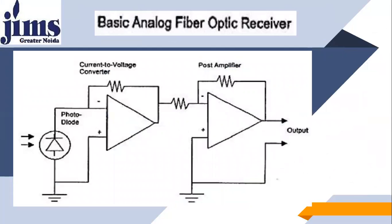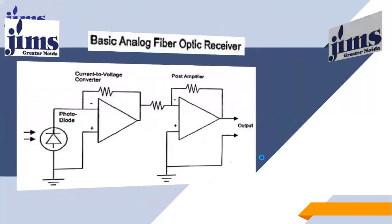This is a basic analog fiber optic receiver. The first stage is the photo detector. Light — photons — arriving from the optical fiber enters the photodiode, which converts the light into an electrical current. An operational amplifier then acts as a converter, transforming this current into a voltage. Since that voltage is very low, another op-amp stage provides amplification, and the amplified signal is the final output. This is how the basic analog fiber optical receiver works. Thank you very much.